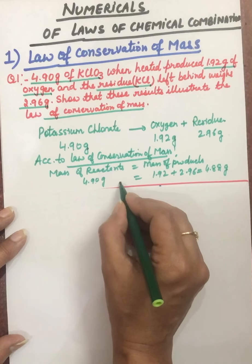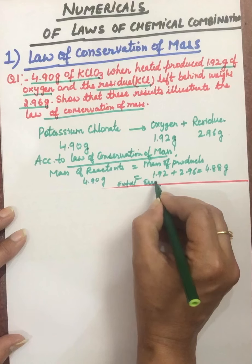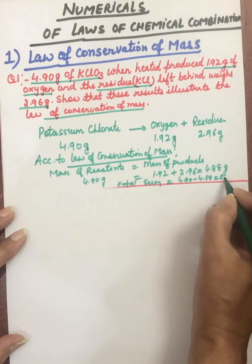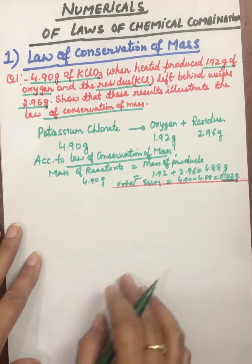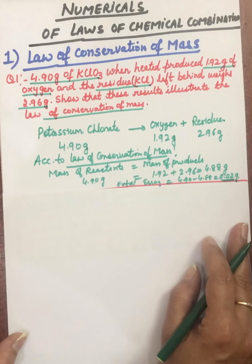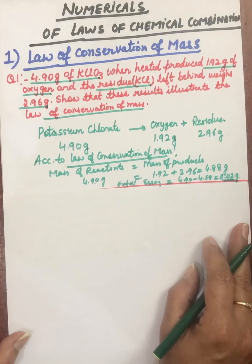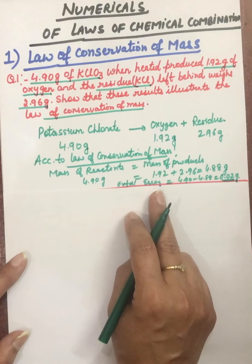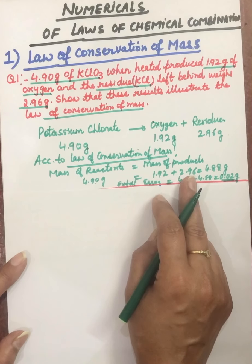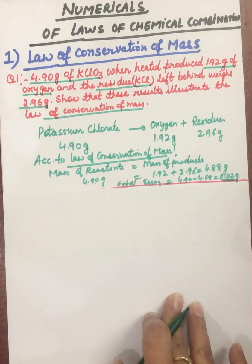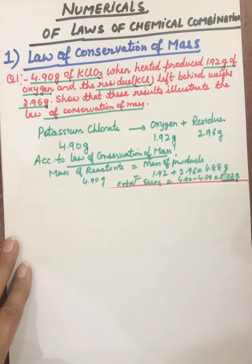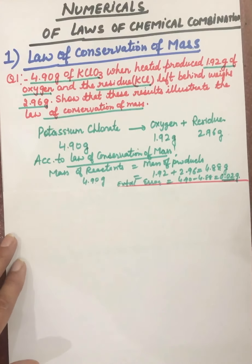Approximately, the mass of reactant equals the mass of the product. The small difference — 4.90 minus 4.88 equals 0.02 gram — is called experimental error. While doing the experiment, there can be some error in calculating the masses, or error in collection or loss of material. So we say approximately these are equal, and hence this illustrates the law of conservation of mass.